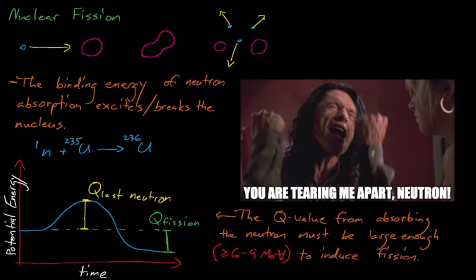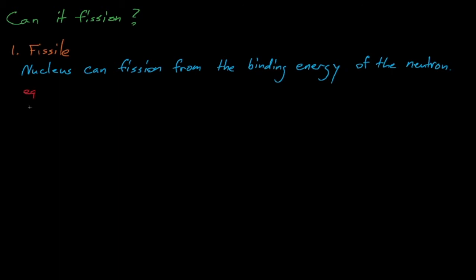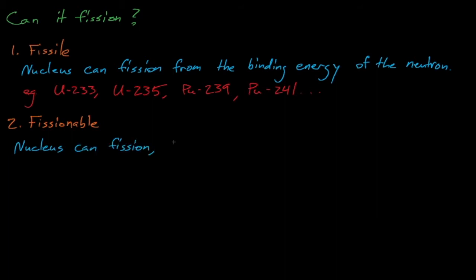The binding energy gained from absorbing this last neutron isn't always enough to cause fission, and in general there are two classes of nuclei that can fission. Fissile nuclei can fission from the binding energy alone of absorbing this last neutron, while fissionable nuclei require a little more energy to get over this hump.